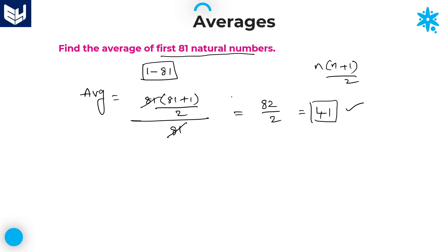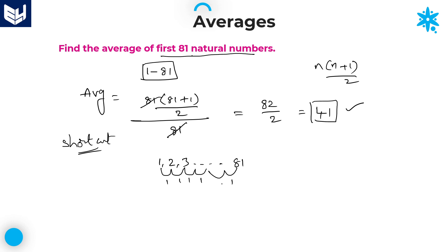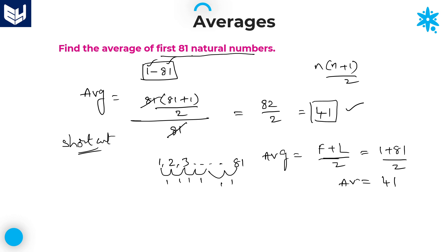There is also a shortcut method. As I explained in the last session, when we have 81 natural numbers — 1, 2, 3, and so on up to 81 — whenever the gap between any two consecutive numbers is the same, the required average is simply the first number plus the last number divided by 2. So directly: 1 plus 81 divided by 2 equals 82 divided by 2, which is 41. That is the required average.